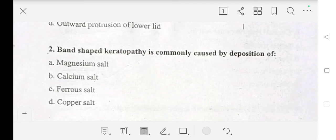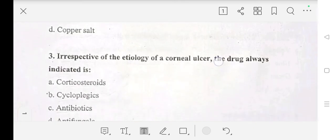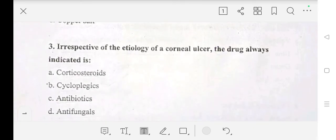magnesium salt, calcium salt, ferrous salt, or copper salt? Answer is calcium salt. Third question: irrespective of the etiology of a corneal ulcer, the drug always indicated is corticosteroid, cycloplegic drugs, antibiotics, or antifungal?